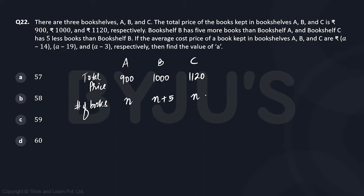If the average cost price of a book kept in bookshelves A, B, and C are respectively - if you talk about average price, it's given as (a-14), (a-19), and (a-3). So we can say that average price of a book times number of books will result in total price.